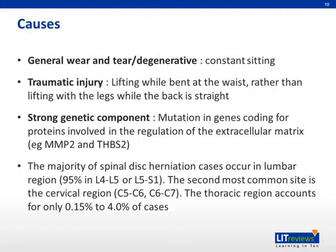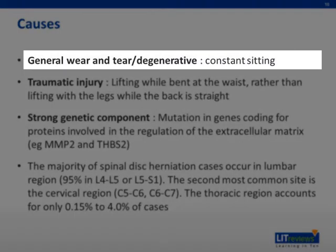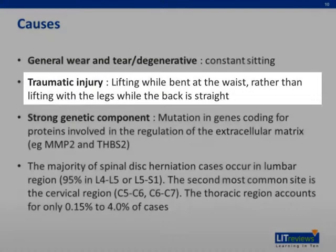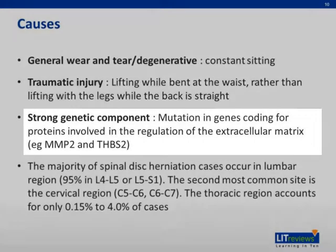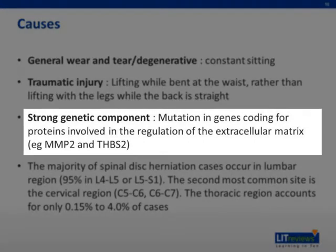What causes disc herniation? General wear and tear and degenerative processes due to age, repetitive strain, or constant sitting with poor posture is a common cause. Traumatic injury, like lifting while bent at the waist rather than lifting with the legs while the back is straight, is another common precipitant. It is also important to note that disc herniation has a strong genetic component — mutation in genes coding for proteins involved in the regulation of the extracellular matrix has been implicated in this condition.